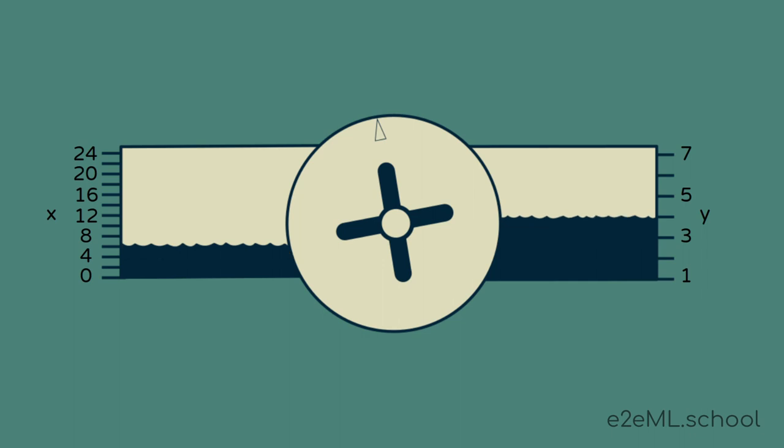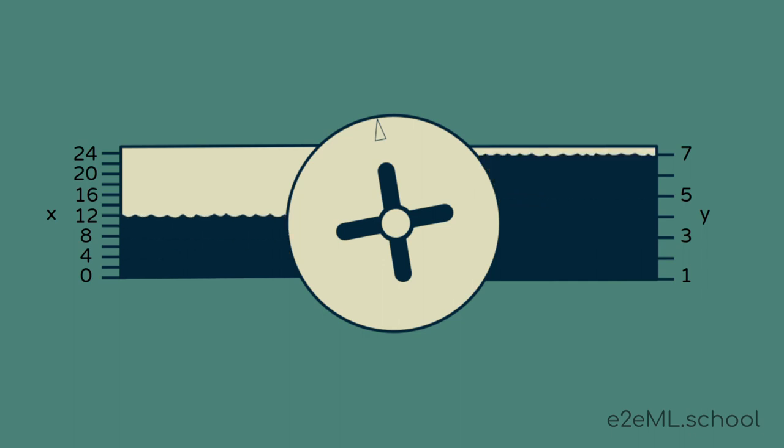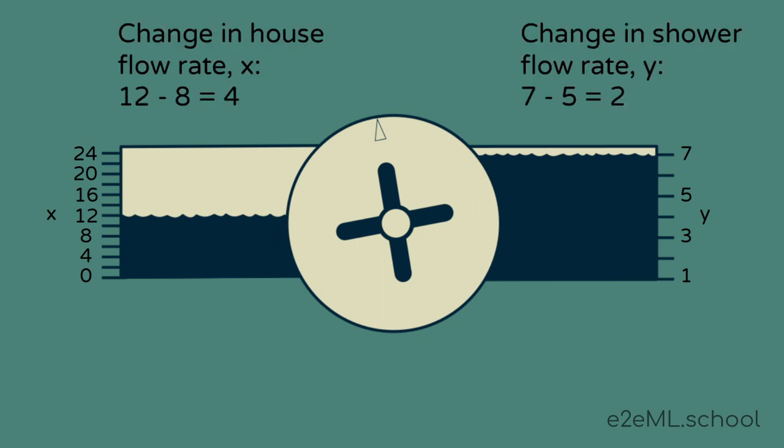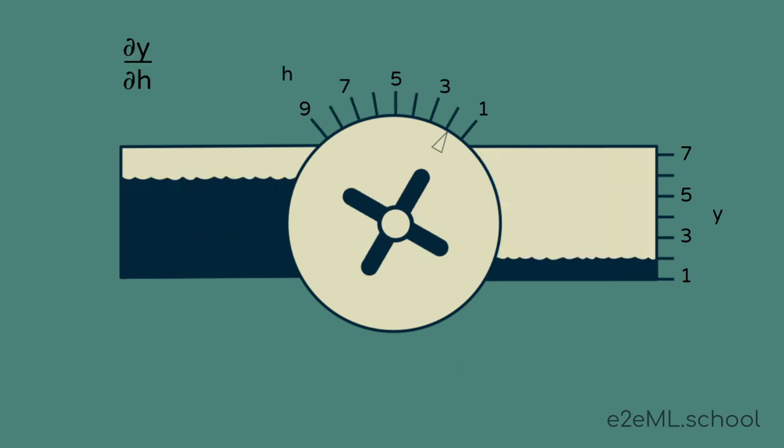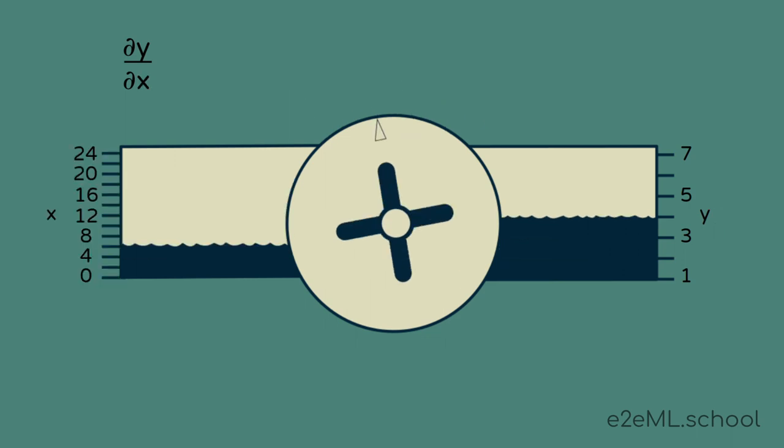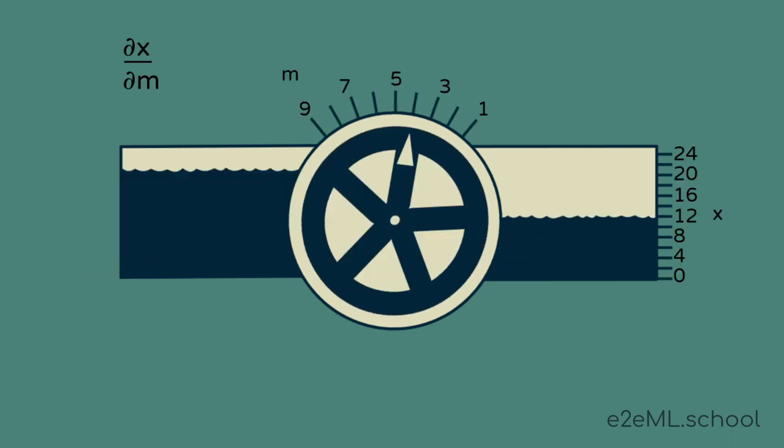Adjusting the main valve M changes the house flow rate X, which indirectly affects the shower flow rate Y. By measuring the change in the house flow rate X and the corresponding change in the house flow rate through the shower head Y, we can find the sensitivity of the shower flow rate to increases in the house flow rate, dY/dX. So now we have a few different sensitivities, dY/dH, dY/dX, and dX/dM. This is a solid start. This is exactly what we need to start calculating what adjustments we need to make.